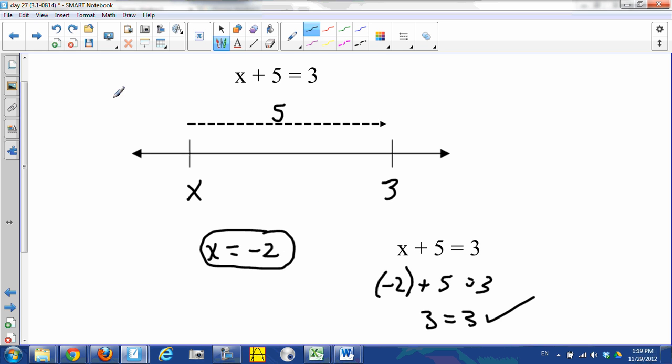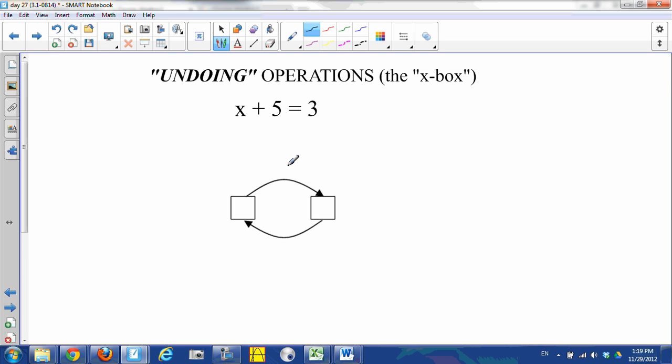I want to show you one more perspective or thought process that we can use. This is what I call undoing the operations that have been done. We're going to always think about starting with the x. x is what's being operated on. So I'm going to start with x in the x box. And then adding 5, this operation, the arrow going from left to right, is indicating the operation of plus 5. And the result of adding 5 to x is 3.